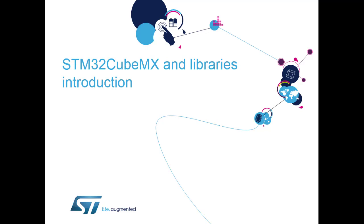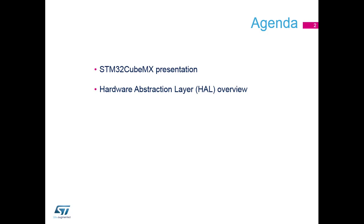We've had a play around with the software using C and direct register access of memory locations. We're now going to look at what CubeMX and libraries can bring to your software development. We'll look at the CubeMX tool itself, then the HAL hardware abstraction layer, then the low level libraries, and see how these help you control the STM32 to make your code more portable and easier to read.